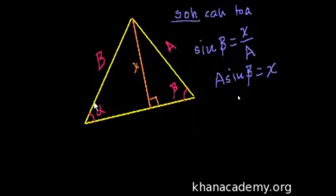Well, let's see if we can find a relationship between alpha, B, and X. Well, similarly, if we look at this right triangle, what deals with X here relative to alpha is also the opposite side, and B now is the hypotenuse.